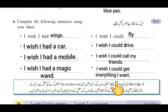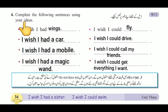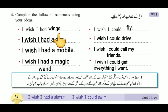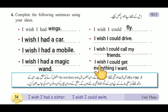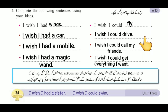For question number 4, completing with own ideas: 'I wish I had wings' — کاش میرے پر ہوتے۔ 'I wish I had a car.' 'I wish I had a mobile.' 'I wish I had a magic van.' 'I wish I could fly.' 'I wish I could drive.' 'I wish I could call my friends.' 'I wish I could get everything I want.' This completes the exercise on page 34. Thank you very much.